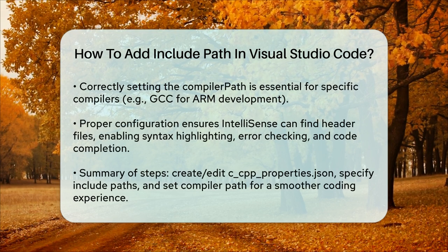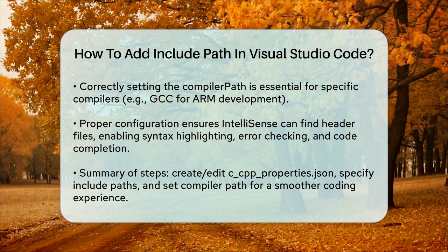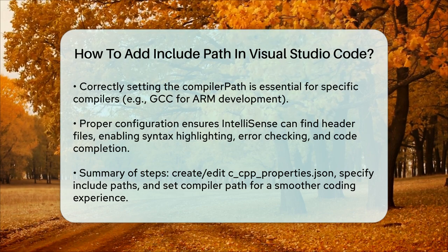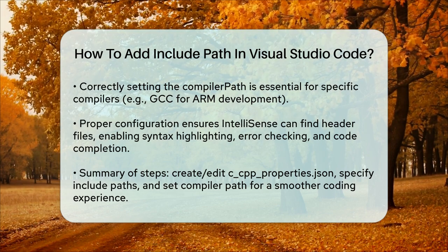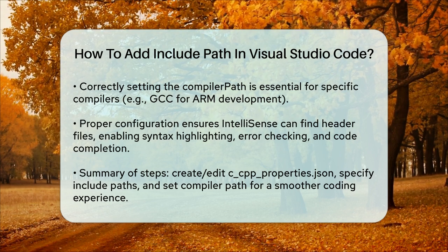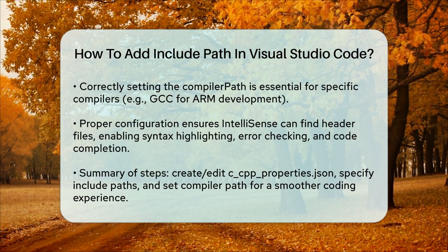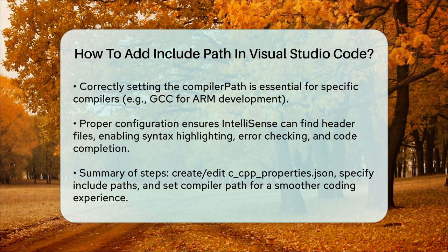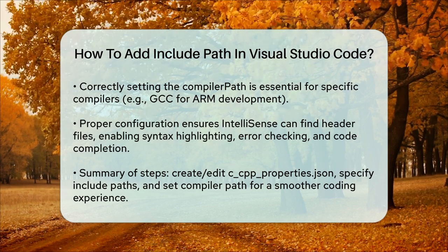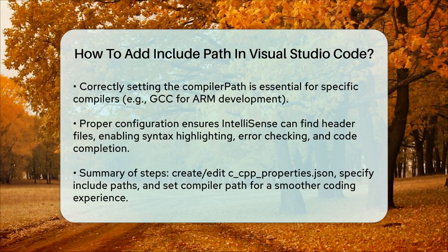By setting up your Include Path correctly in the c_cpp_properties.json file, you ensure that VS Code's IntelliSense can find all the necessary header files, providing you with features like syntax highlighting, error checking, and automatic code completion. So to sum it up, adding an Include Path in Visual Studio Code involves creating or editing the c_cpp_properties.json file, specifying the necessary Include Paths in the Include Path section, and ensuring that your compiler path is set correctly. This will help you avoid errors and make your coding experience smoother.